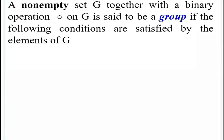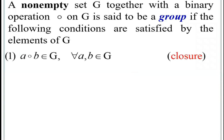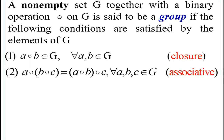Now we define what is a group. A non-empty set G together with a binary operation circle defined on G is said to be a group if the following conditions are satisfied. The first condition is the closure axiom: A circle B belongs to G for all A, B in G — that is, we take any two elements from G and A circle B must also belong to G. The second axiom is the associative axiom: A circle (B circle C) equals (A circle B) circle C for all A, B, C in G.